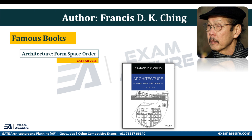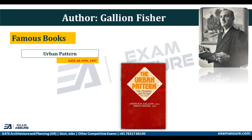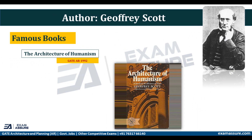Next is Francis D.K. Ching, and one of his famous books is 'Architecture: Form, Space and Order'. Next we have Gallion and Fisher, and one of their famous books is 'Urban Pattern'. Next we have Geoffrey Scott, and one of his famous books is 'The Architecture of Humanism'.